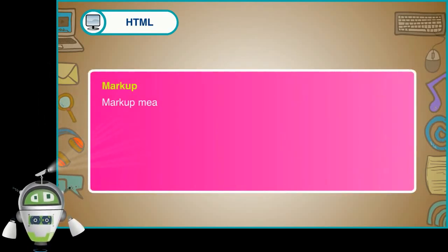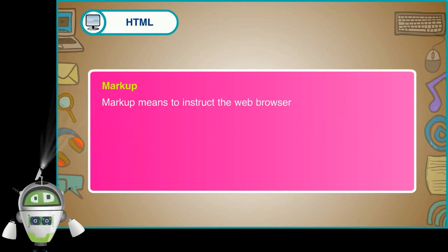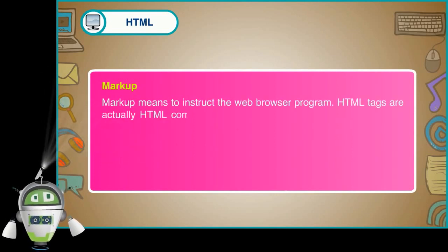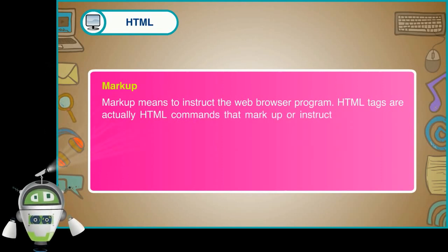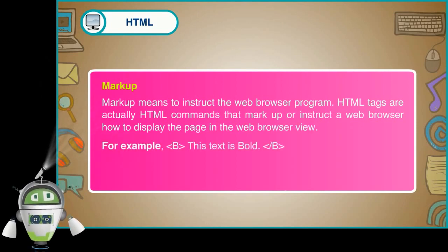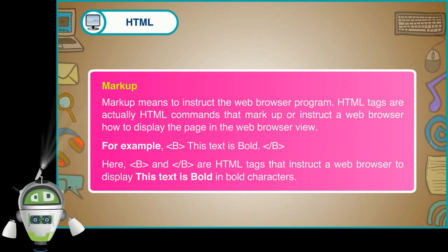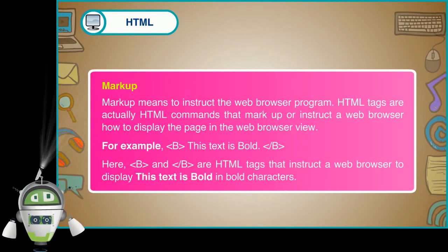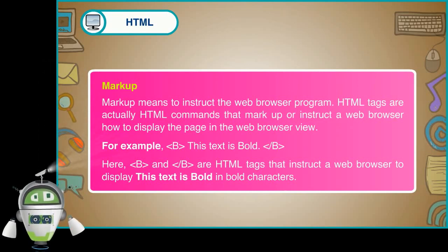Markup means to instruct the web browser program. HTML tags are actually HTML commands that markup or instruct a web browser how to display the page in the browser view. For example, &lt;b&gt; This text is bold. &lt;/b&gt; Here, &lt;b&gt; and &lt;/b&gt; are HTML tags that instruct a web browser to display 'This text is bold' in bold characters.